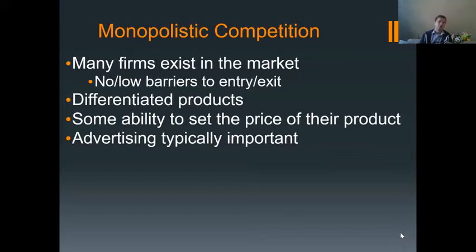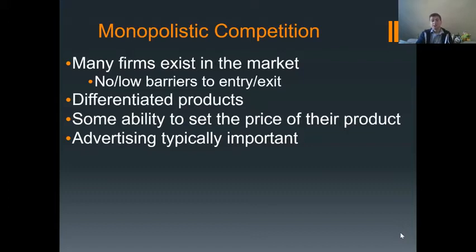Sometimes the difference can be a little bit more imagined, but you have enough of a difference where you can tell it and you prefer one over the other. But if your favorite place shuts down, it's not like you're going to stop eating pizza — you're just going to go to the next place down the line that you like. So that's really the best example of a monopolistic competitor: those types of small businesses.